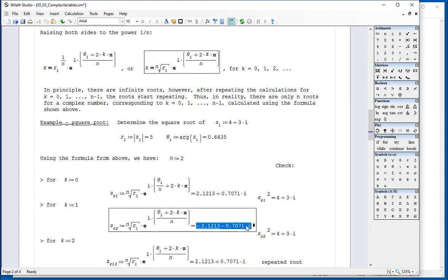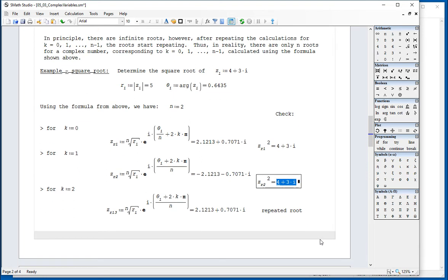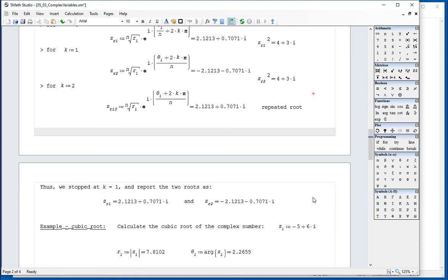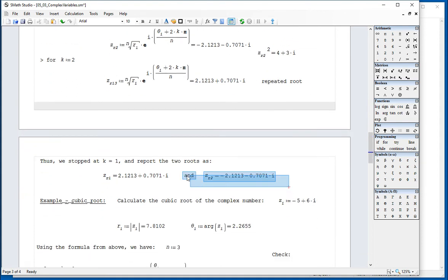If I do it for k equal 1, I obtain this value, which happens to be the negative of this one. And that value also has the square equal to 4 plus 3i. After that, my roots start repeating. And so I'm going to have to stop at this point. So you have two roots, and these are given by these two values. This one starts repeating, as you can see right there.